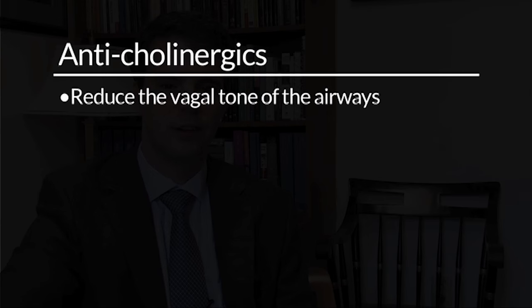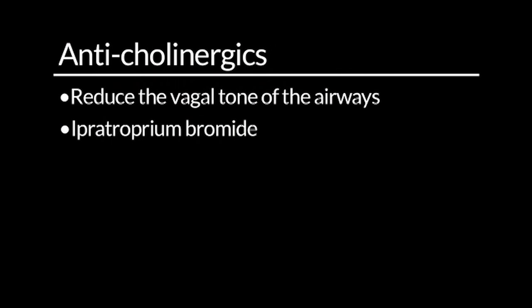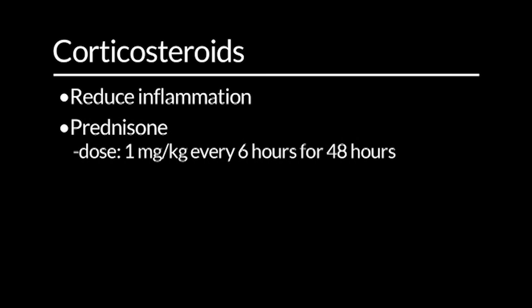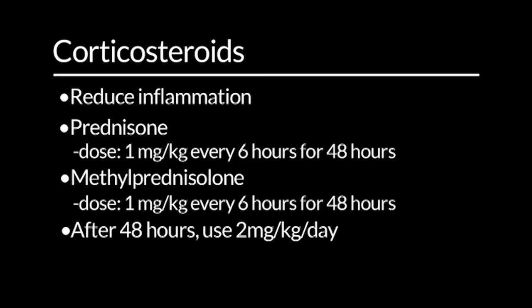Anticholinergics reduce the vagal tone of the airways, and ipratropium bromide has been used at 0.25 mg every 20 minutes. Corticosteroids are important to reduce inflammation in the airways during an asthma attack, as inflammation is a main component of the disease. We usually use prednisone at 1 mg per kg every 6 hours for 48 hours, or methylprednisolone IV at the same dose, and after 2 days we use 2 mg per kg per day.